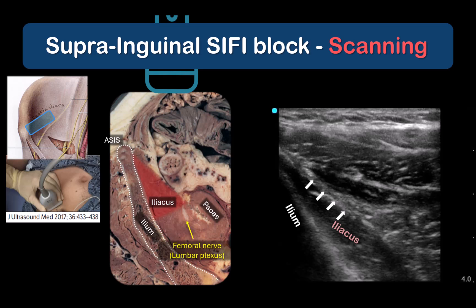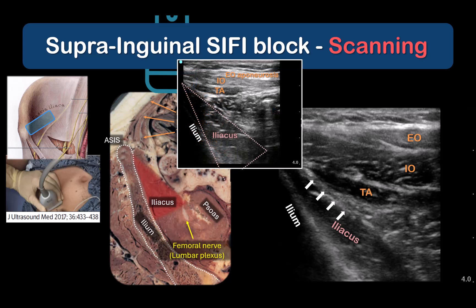The abdominal wall muscles — external oblique, internal oblique, and transversus abdominis — abut the medial aspect of the iliacus muscle and fascia iliaca. If the probe is caudal to the ASIS, the external oblique may have transitioned into an aponeurosis and only two muscle layers will be seen. Look for and avoid the iliohypogastric and ilioinguinal nerves and branches of the deep circumflex iliac artery that lie sandwiched between internal oblique and transversus abdominis muscles.